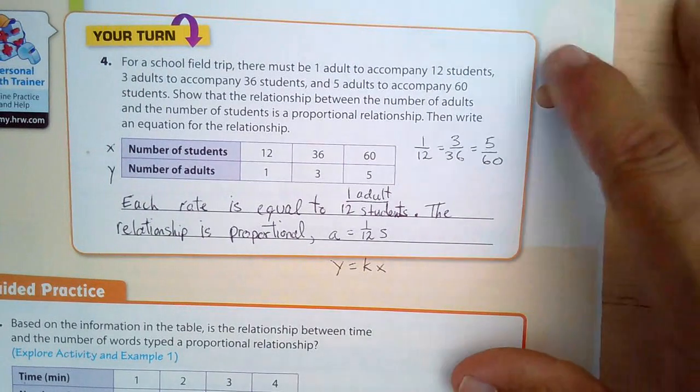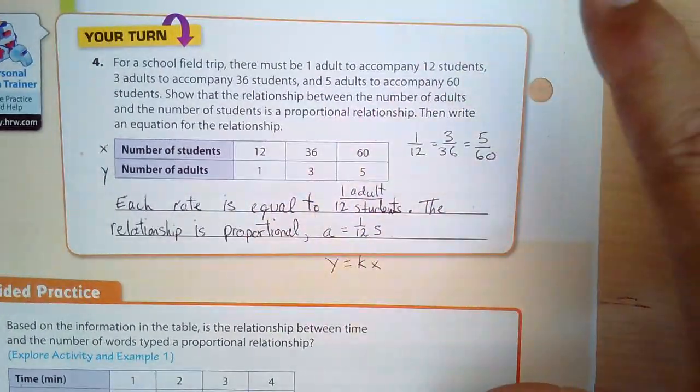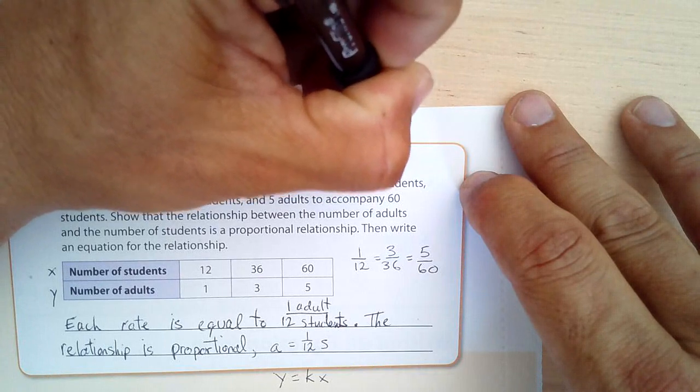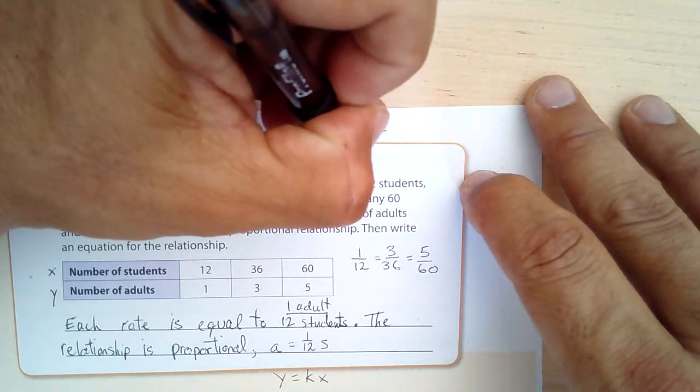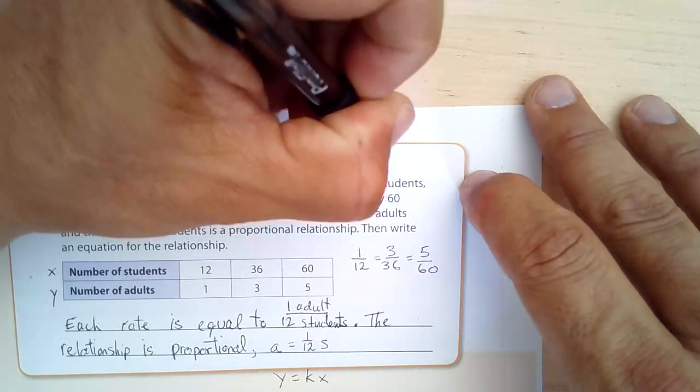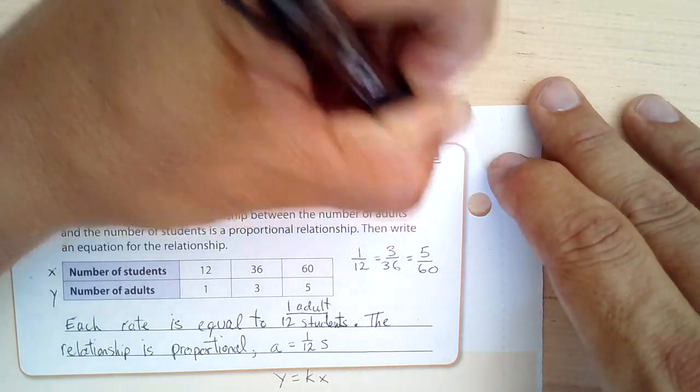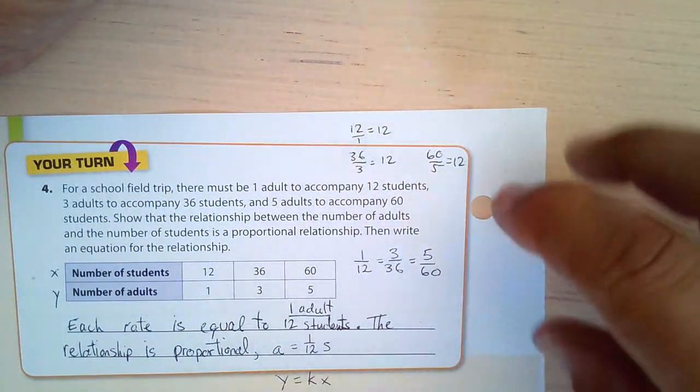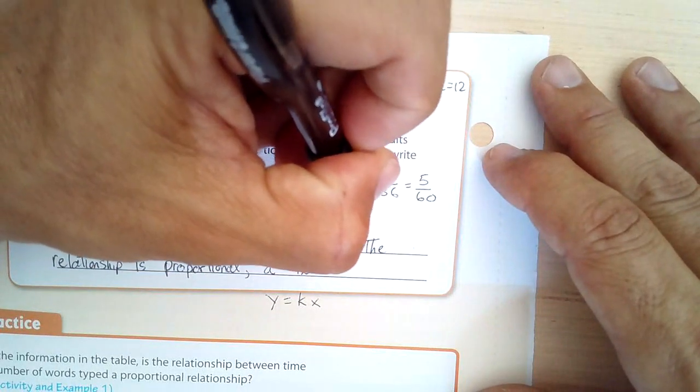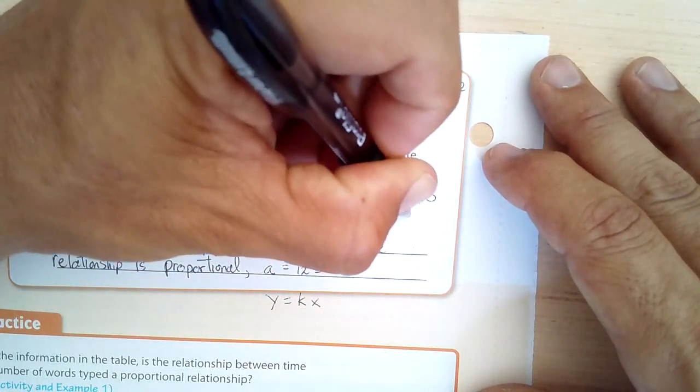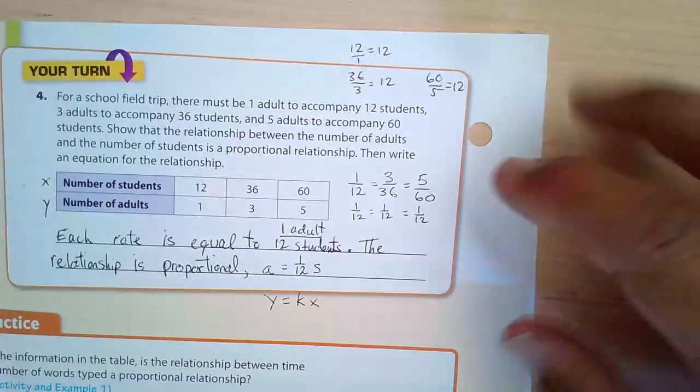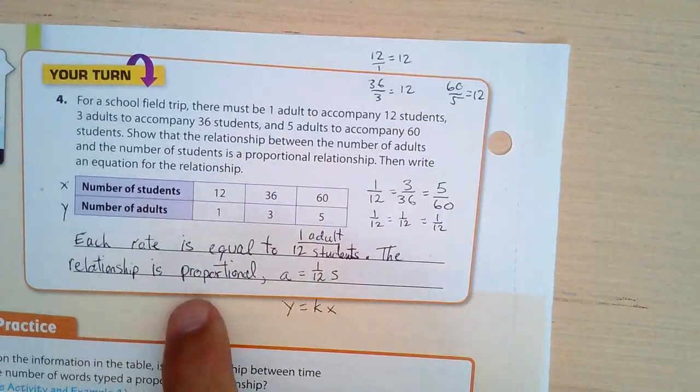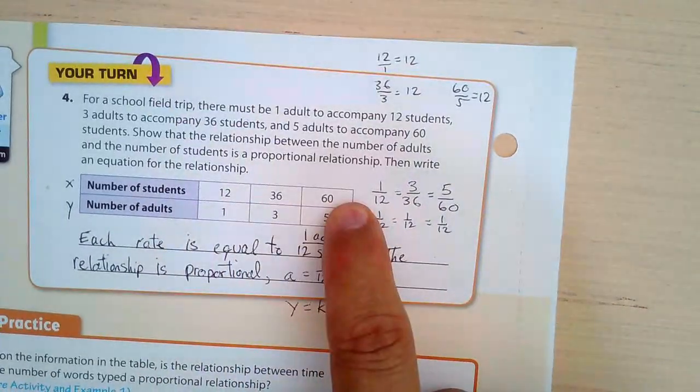Well, yeah, you could flip these all over just to compare them. You can take 12 over 1. That's equal to 12. Then we could have 36 divided by 3. That's also 12. And we take 60 divided by 5. And that is also equal to 12. So you can reciprocalize all of those and say, oh yeah, they're going to be the same. They all, also, you can see that they all simplify to 1/12. You can simplify these fractions. So there's a couple ways of noticing that, yeah, they're all the same. Each rate is equal, one adult to 12 students. The relationship is proportional. Okay. So each of these have the same rate. Great.